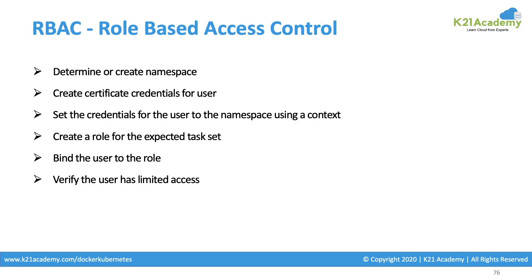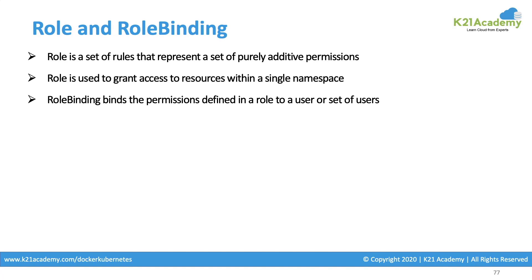But what actions Dan can perform can only be defined by a specific role assigned to him. In the dev namespace, Dan can have reader access or editable access on specific resources. I can say Dan can only create a pod or a deployment, but Dan can't create a PVC. I can restrict actions at the resource level as well. When we create a role and assign a user to it, that is called binding. We bind the user to a role, and that is how we limit the access given to that particular user. So we have role and role binding.